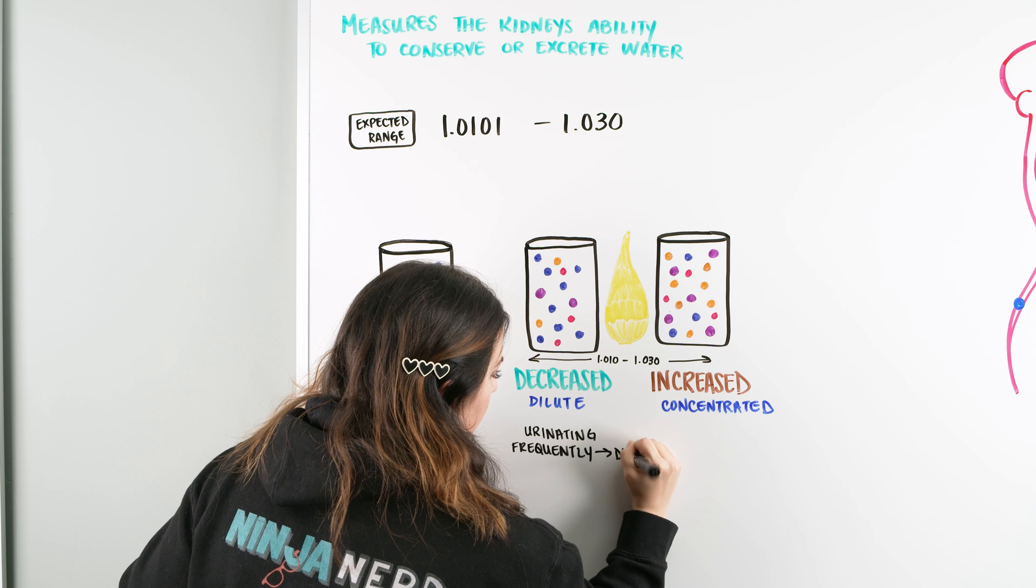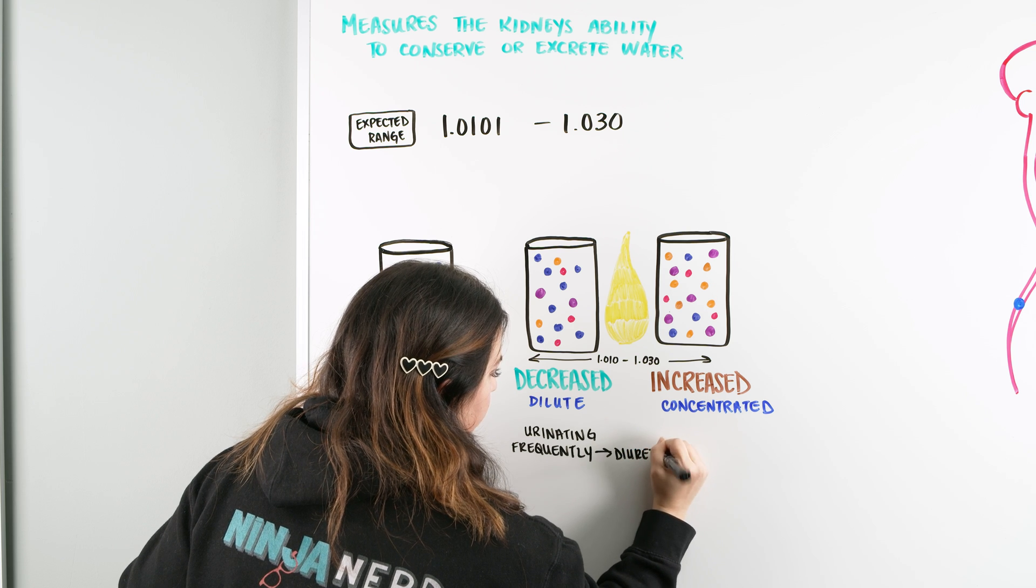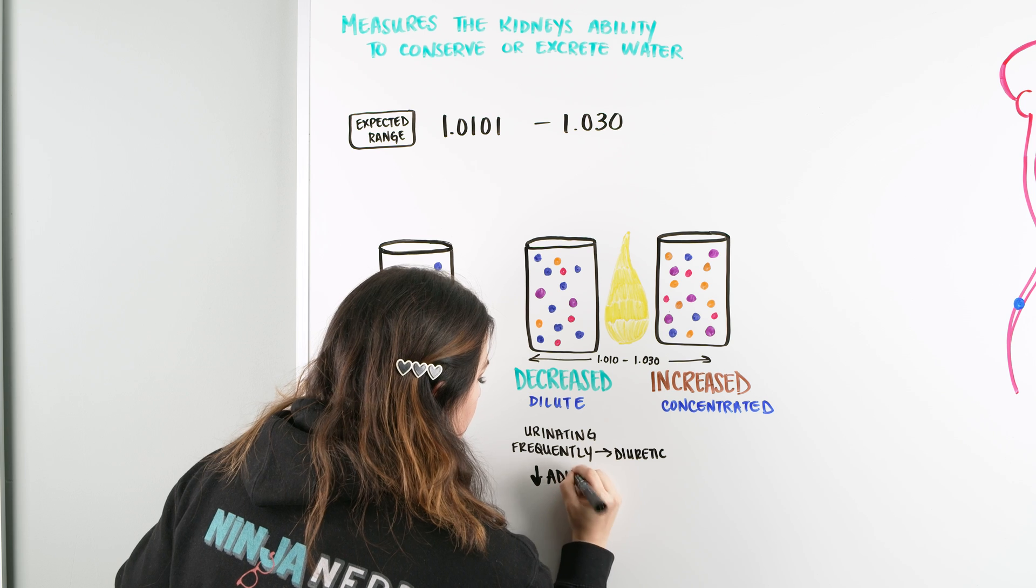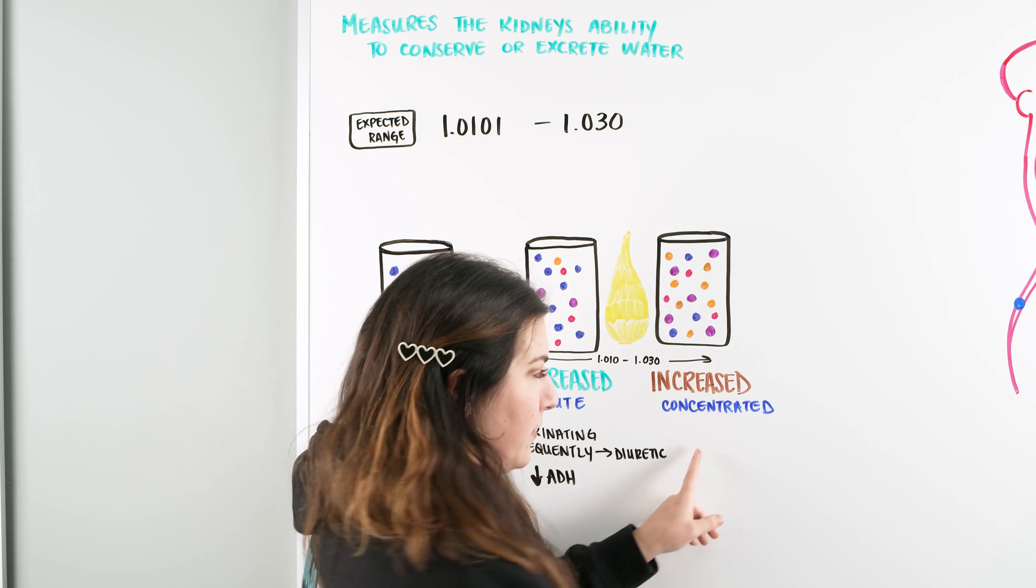So this could be someone like on a diuretic. It could be somebody who has a decrease in their anti-diuretic hormone, so they're just peeing more often.